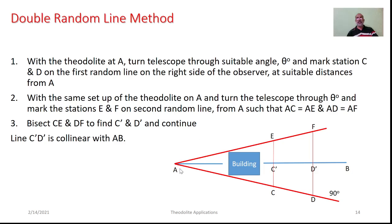In the double random line method, with the theodolite at station A, turn the telescope through theta degrees and mark stations C and D on the first random line. With the same setup, turn through another suitable angle and mark stations E and F on the second random line, such that AC = AE and AD = AF. Bisect CE and DF to create locations C-dash and D-dash, which will be co-linear with AB.